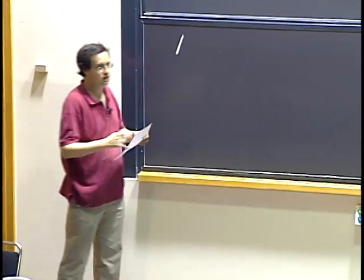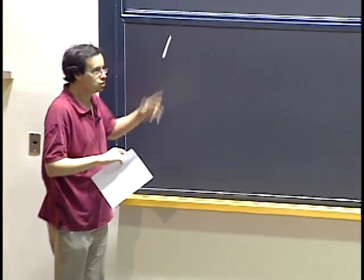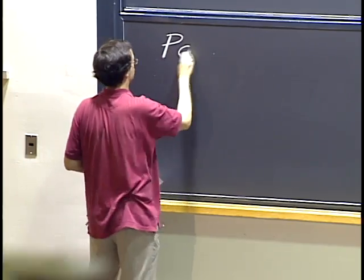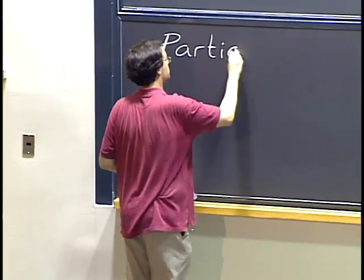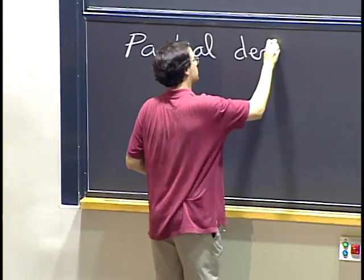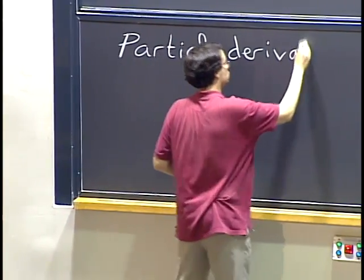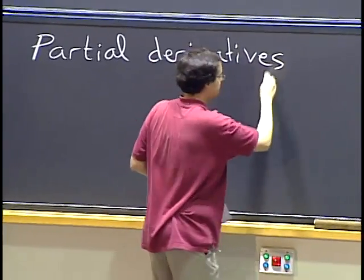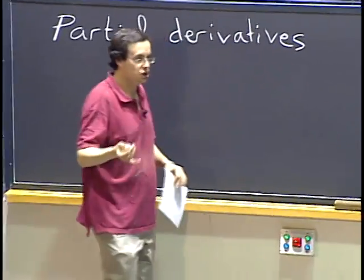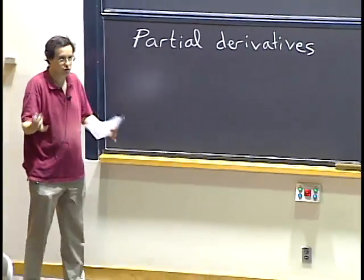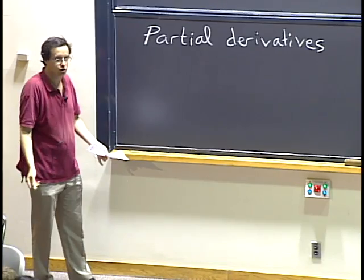Today we are going to see how to use what we saw last time about partial derivatives to handle minimization or maximization problems involving functions of several variables.